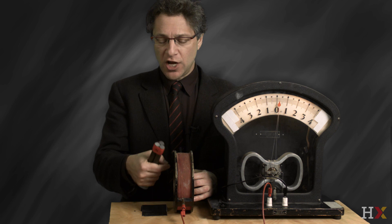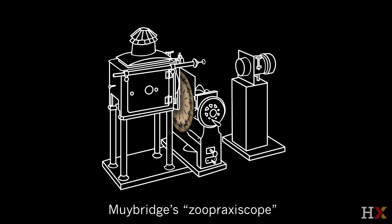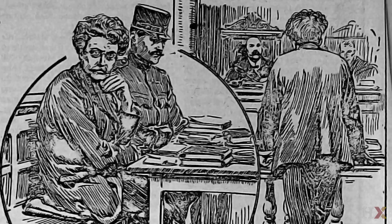Part one also covers the connections to the relations of art and science, and of politics and science in those turbulent days of the early 20th century up through World War I, in which Einstein found himself.